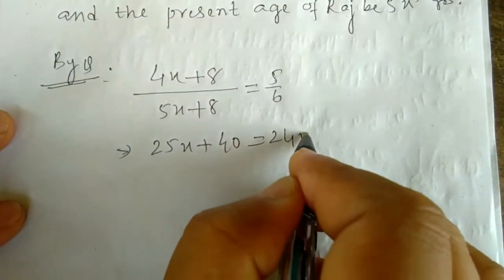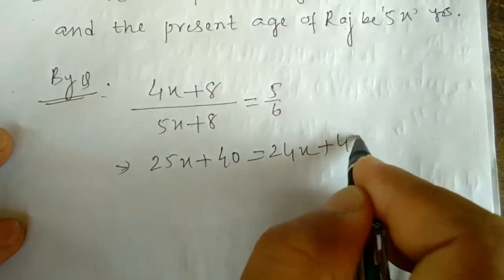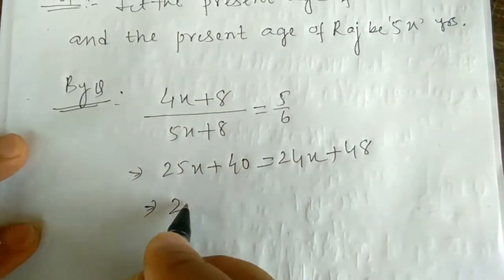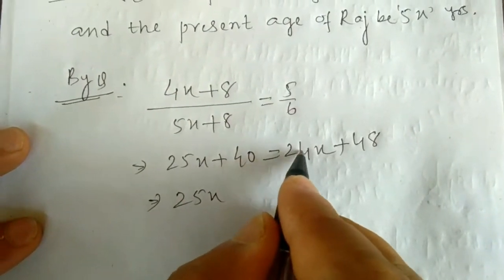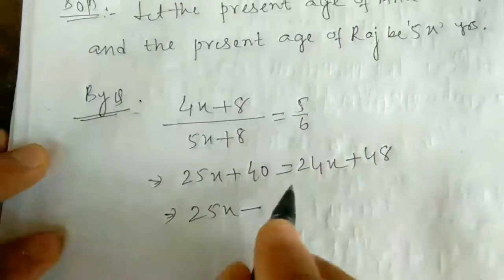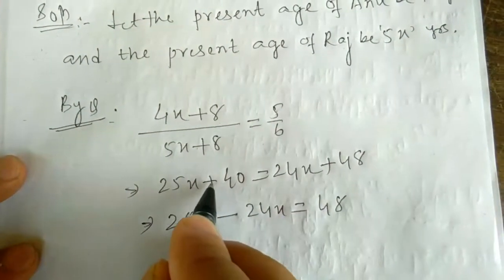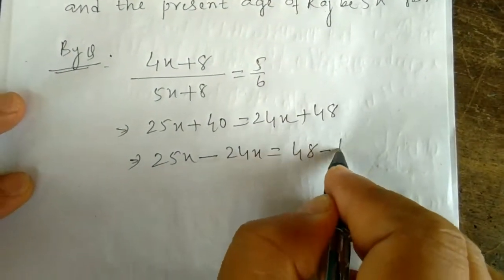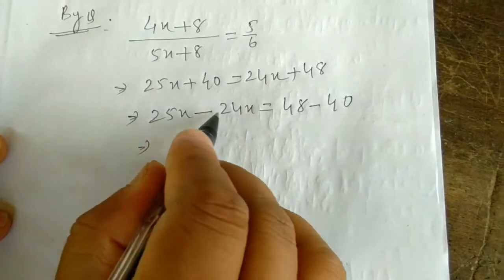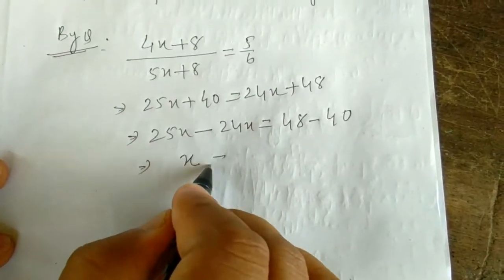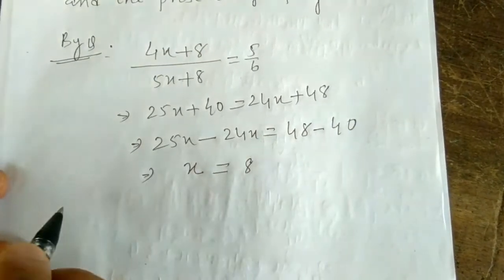Cross multiply: 5(5x + 8) = 6(4x + 8), giving 25x + 40 = 24x + 48. Bring x to the left: 25x − 24x = 48 − 40, so x = 8.